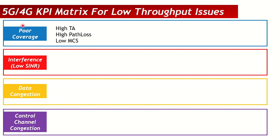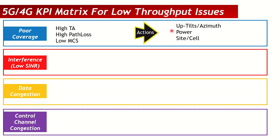Throughput is impacted because users are in poor coverage. To solve this, look at the cells showing these signatures. You can up-tilt the antenna so it covers further, increase power so coverage improves, or retune the azimuth if users are in a blind spot on the map. If everything else is done and you're still unable to tackle the poor coverage issue, you can also suggest a new site or cell.